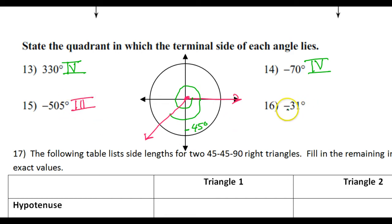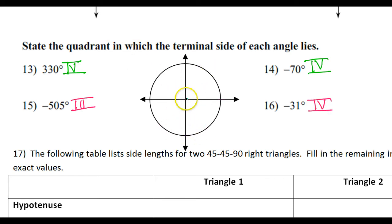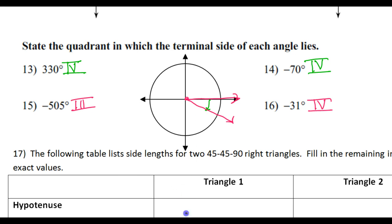Negative 31 degrees is easy to tell without even drawing it — that's going to be in the fourth quadrant. Because the terminal side starts out here, and because it's negative, I need to go in this direction. But 31 degrees is very small, so that's just going to take me a tiny ways and drop me in the fourth quadrant. And that is how you tell what quadrant the terminal side of an angle is in. I'll see you on the next video.